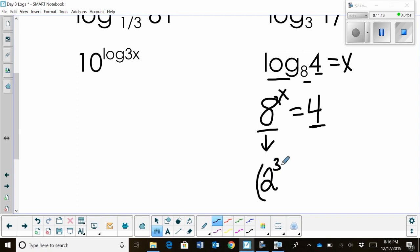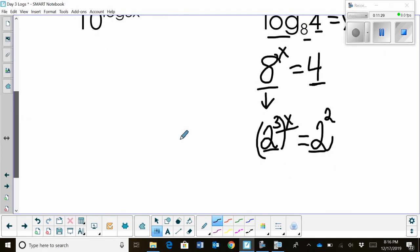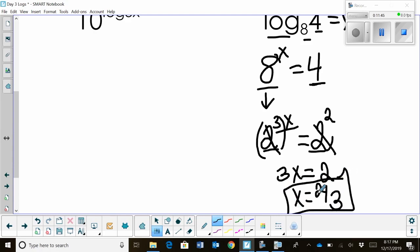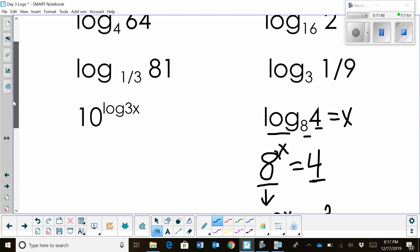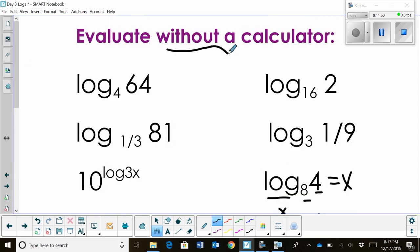So I'm going to rewrite 8 as 2 cubed. Well, 2 cubed all to the x power is really just 2 to the 3x. And that's going to equal, and I can rewrite 4 as 2 squared. So now I've got my bases matching. Well, once my bases match, don't I know, oh, the exponents have to be equal then. So I'm going to set 3x equal to 2. So x is equal to 2/3. And there's my answer. So you're always trying to get like bases. And that's how you simplify logarithms without a calculator.